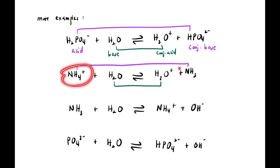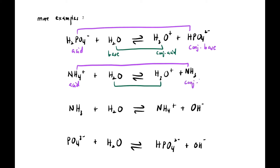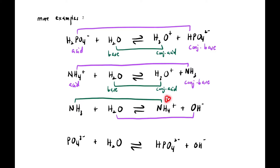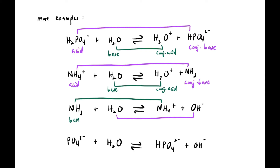Second example: NH₄⁺ + H₂O ⇌ NH₃ + H₃O⁺. NH₄⁺ has an extra H⁺ compared to NH₃, so NH₄⁺ is the acid and NH₃ is its conjugate base. As usual, H₂O is the base and H₃O⁺ is its conjugate acid. Third example: NH₃ + H₂O ⇌ NH₄⁺ + OH⁻. NH₄⁺ has an extra H⁺, so NH₃ is the base and NH₄⁺ is its conjugate acid — remember the conjugate species are on the product side.